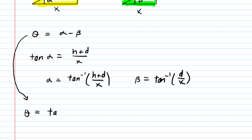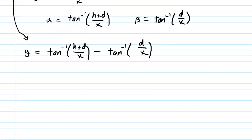With those two expressions for alpha and beta, we can rewrite our equation for theta. Theta equals alpha minus beta — that is, the inverse tangent of (H+D)/X minus the inverse tangent of D/X. Now, once we have theta expressed as a function of X, in order to maximize it we need to compute the derivative with respect to X.